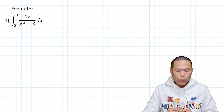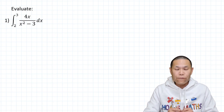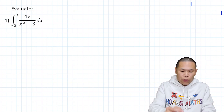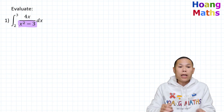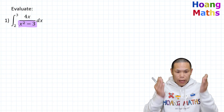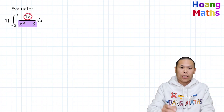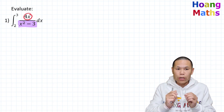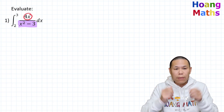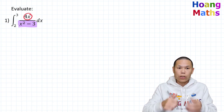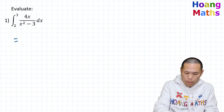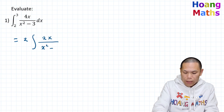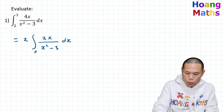First one: we need to evaluate from 2 to 3, 4x over x squared minus 3. If you think about it, if we differentiate the denominator, the bottom here, that will give us 2x. But the numerator has 4x. So we just double that. I can take out the 2, because 4x is exactly the same as 2 times 2x. So that gives me 2 times the integral of 2x over x squared minus 3 dx, from 2 to 3.